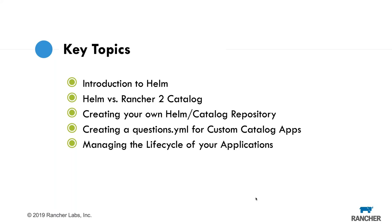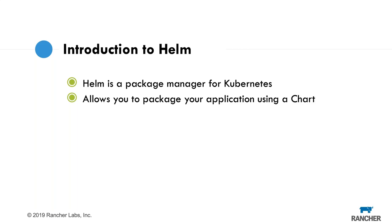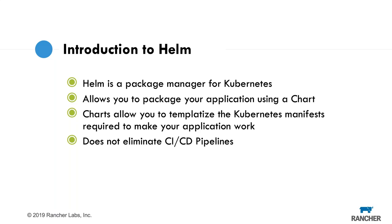Helm is a package manager for Kubernetes. It allows you to package your applications using a Helm chart — essentially a templating engine that lets you deploy Kubernetes manifests in a repeatable way. Importantly, it doesn't eliminate your CI/CD pipeline. Helm is just a tool for deployment; it doesn't help with building images or pushing them — it's just one piece of the puzzle.